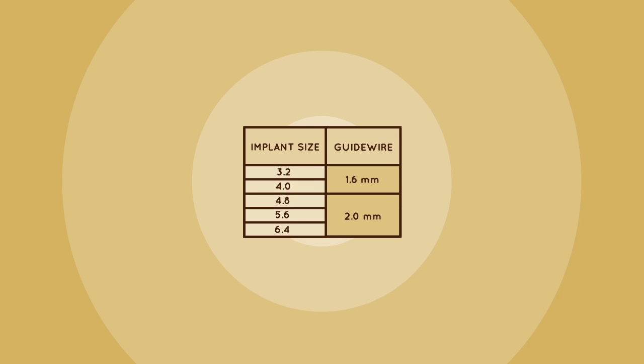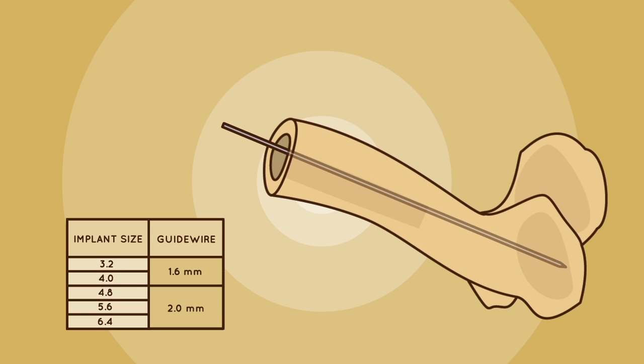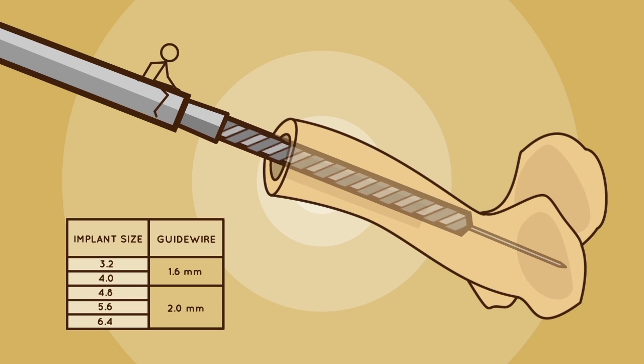Reaming. Reaming of the proximal fragment is done retrograde over a guidewire up to the greater trochanter. The intermediate and distal fragments are prepared in the same fashion.